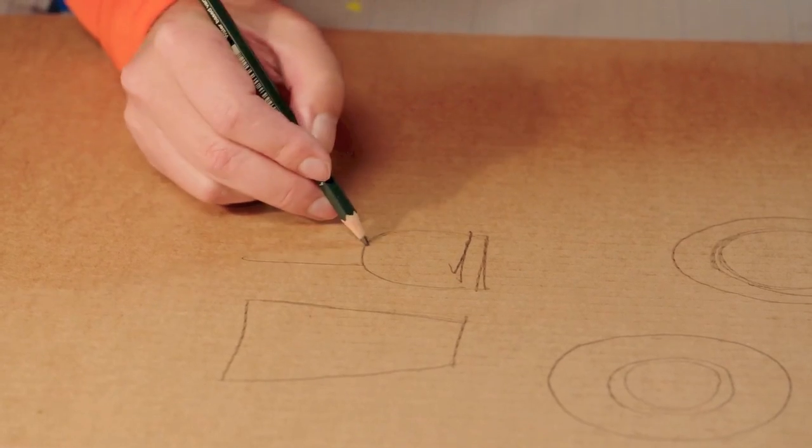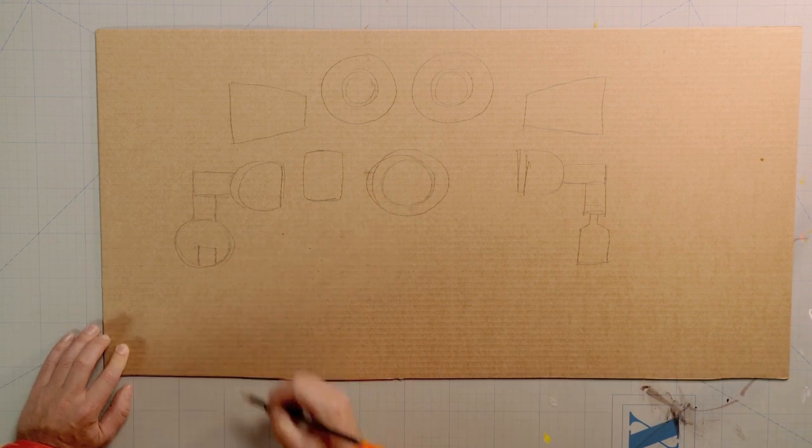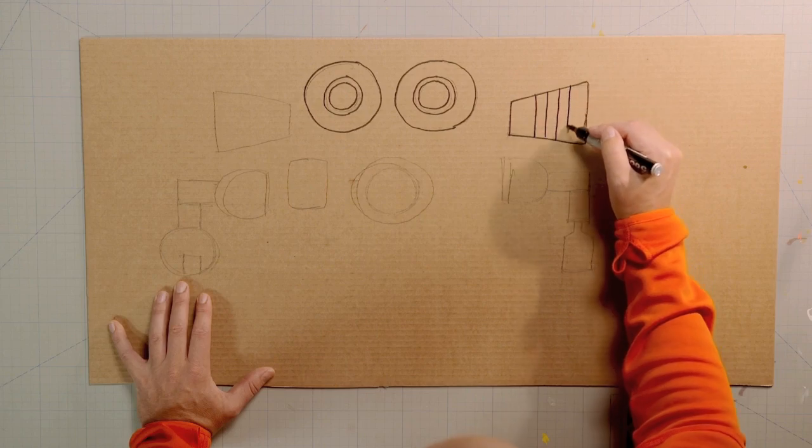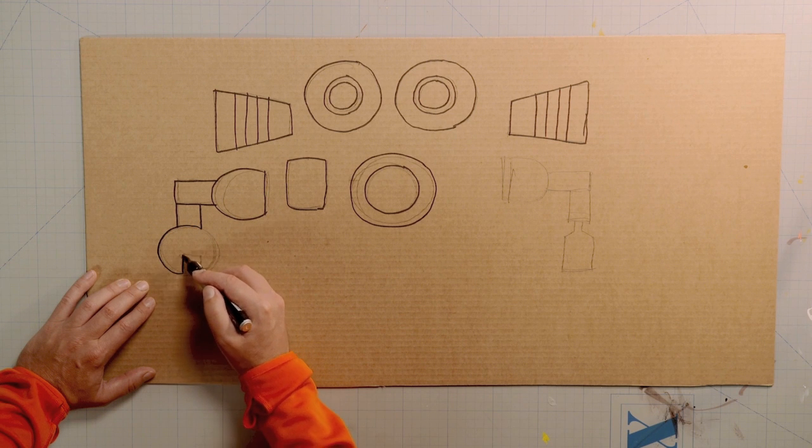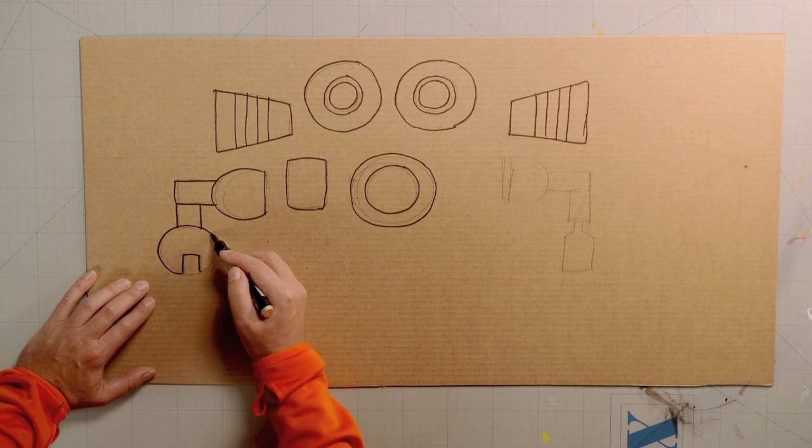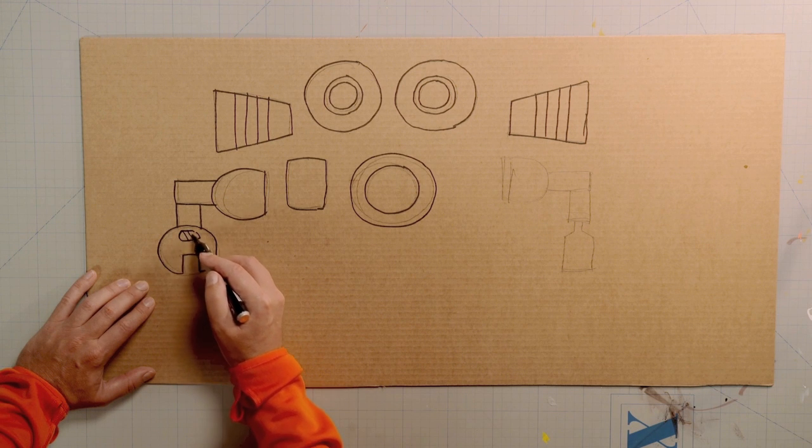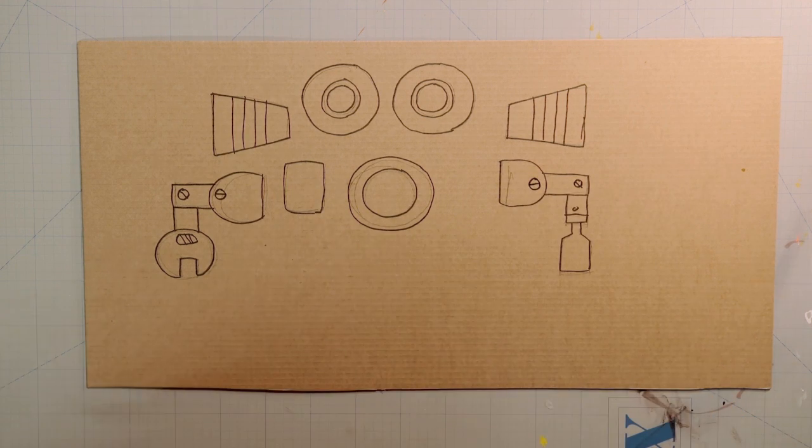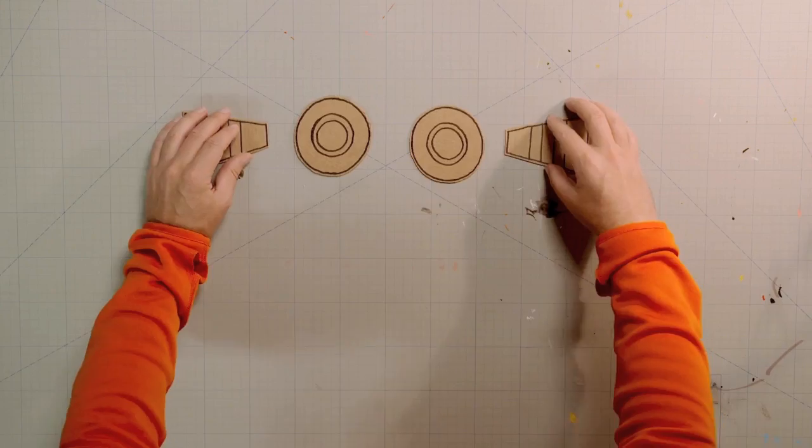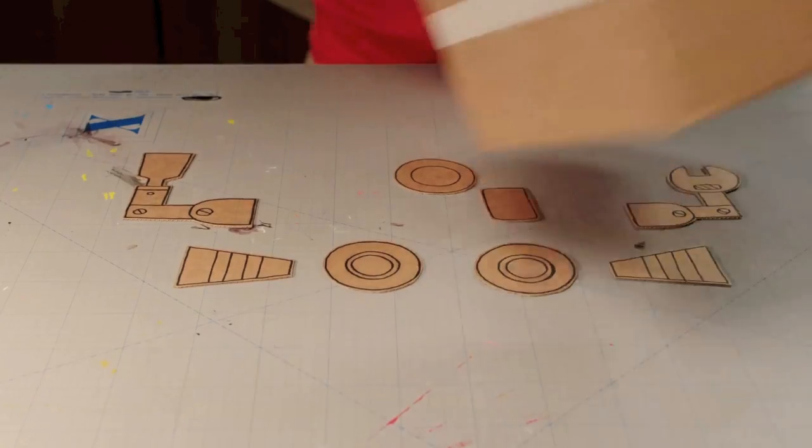Finally, the mechanical arms. When you've drawn everything with a pencil, you can go over the lines again with a thick marker pen. Here are some pieces I cut out earlier. This is how they should look.